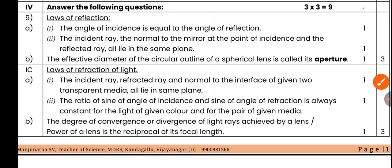Question 9A: Laws of reflection. First law of reflection: The angle of incidence is equal to angle of reflection. Second law: The incident ray, the normal to the mirror at point of incidence, and the reflected ray all lie in the same plane.